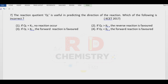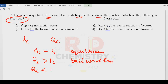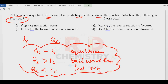Question number seven. The reaction quotient QC is useful in predicting the direction of the reaction. When QC equals KC, the system is at equilibrium. When QC is greater than KC, backward reaction is favored. When QC is smaller than KC, forward reaction is favored. In this question they state QC greater than KC implies forward reaction, but actually backward reaction is favored. So the incorrect statement is option number three.